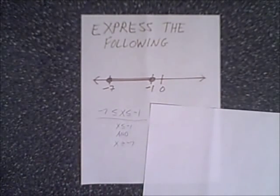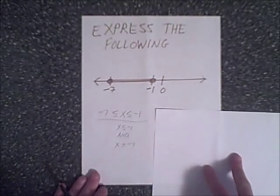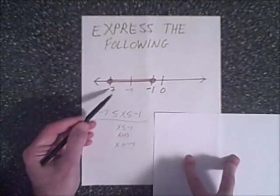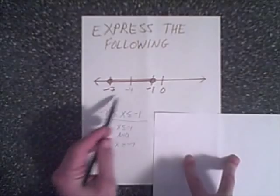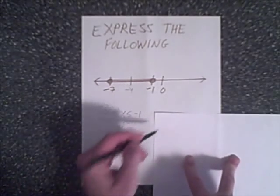So using our 3-step process, let's come up with an absolute value inequality for this graph. What is the midpoint? The midpoint is going to be negative 4. Negative 7 plus negative 1 is negative 8. Divided by 2 is negative 4. So we have our midpoint.